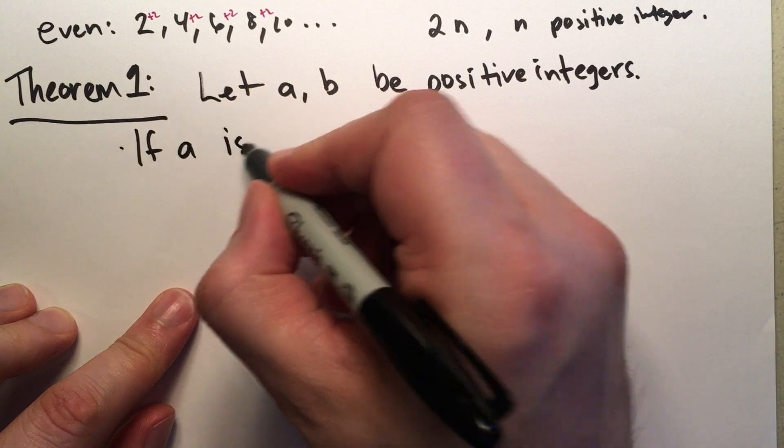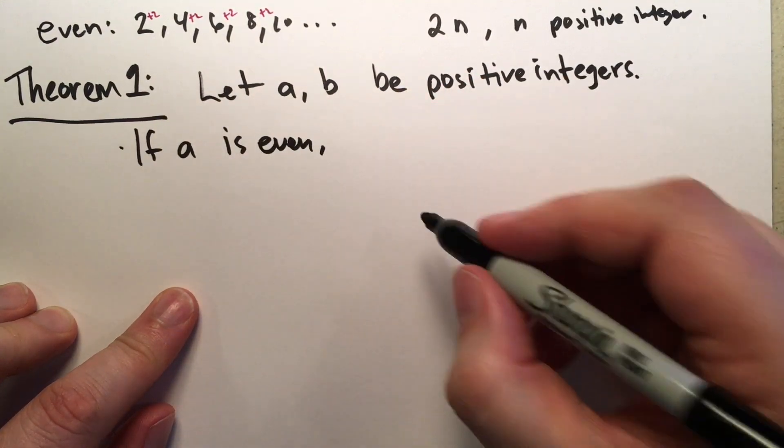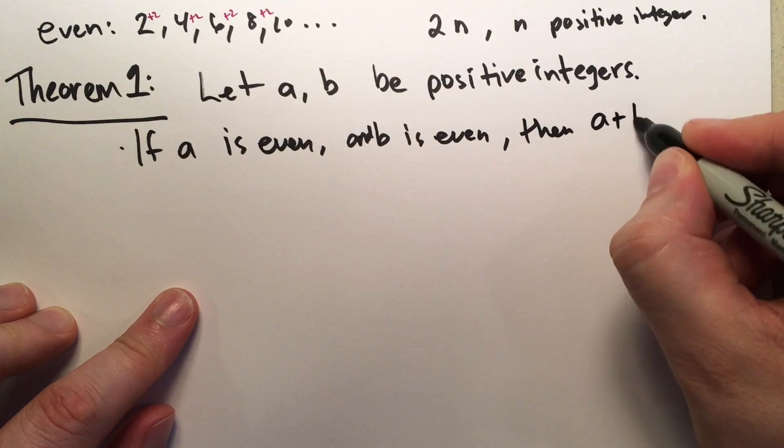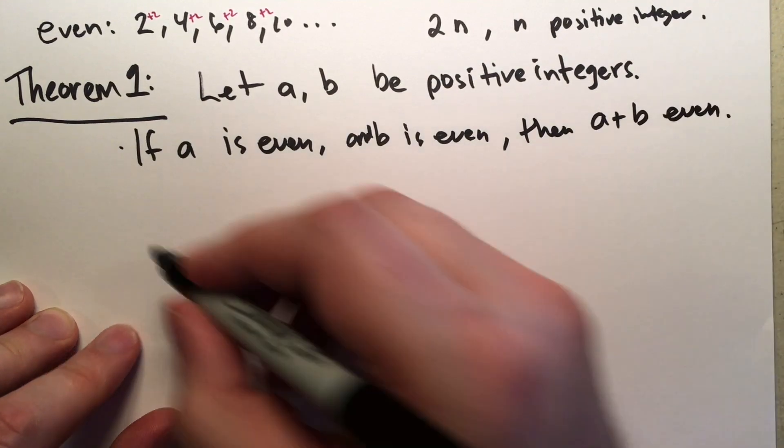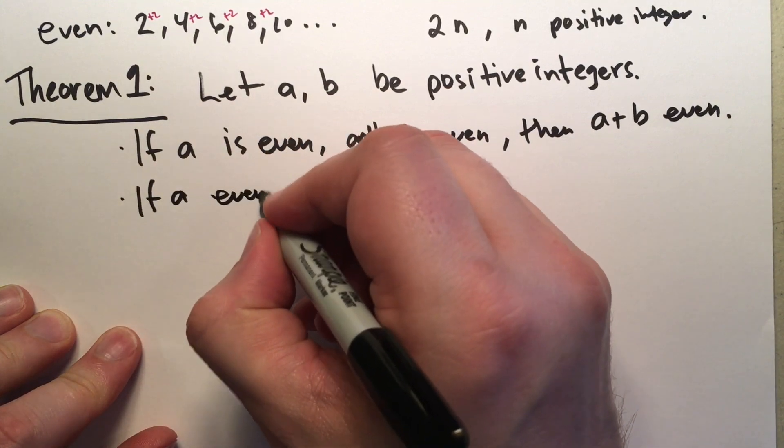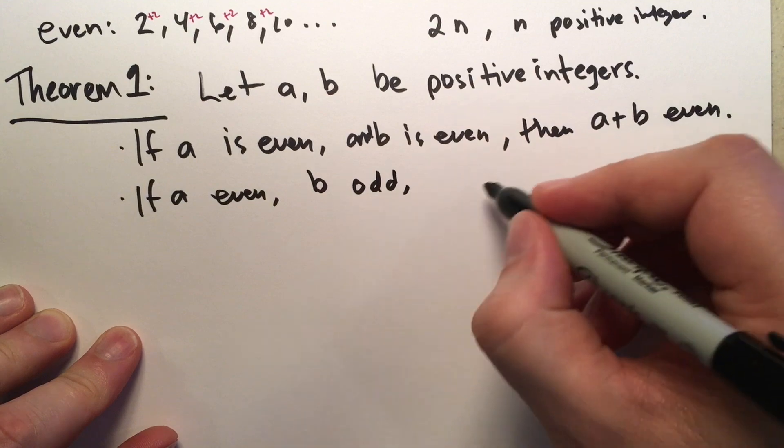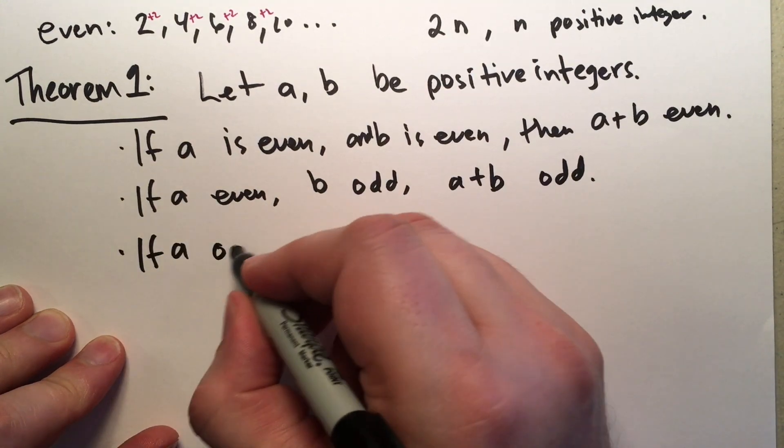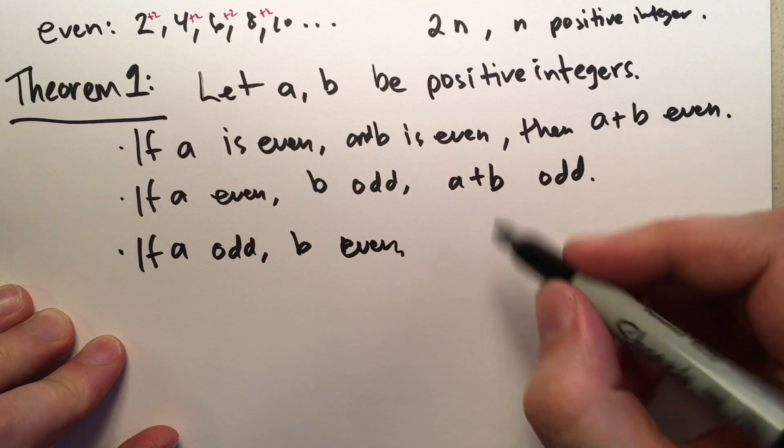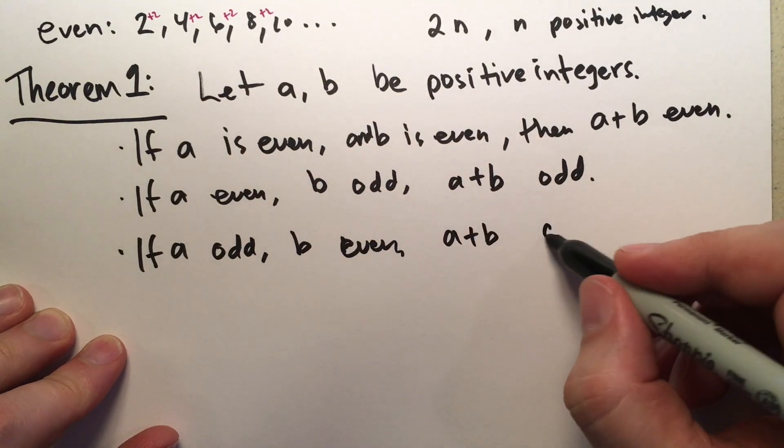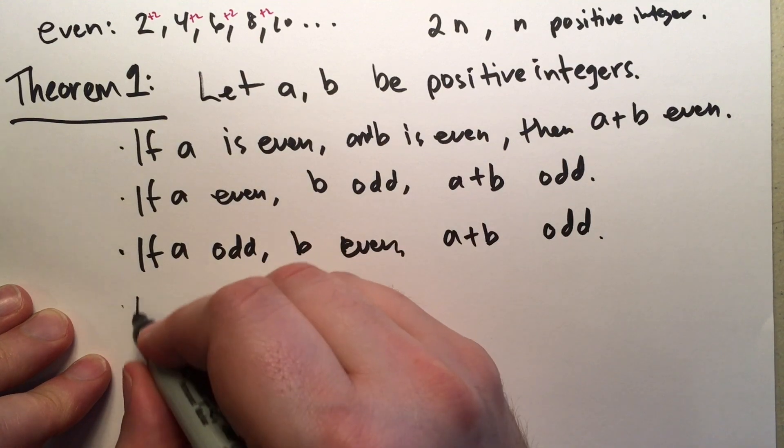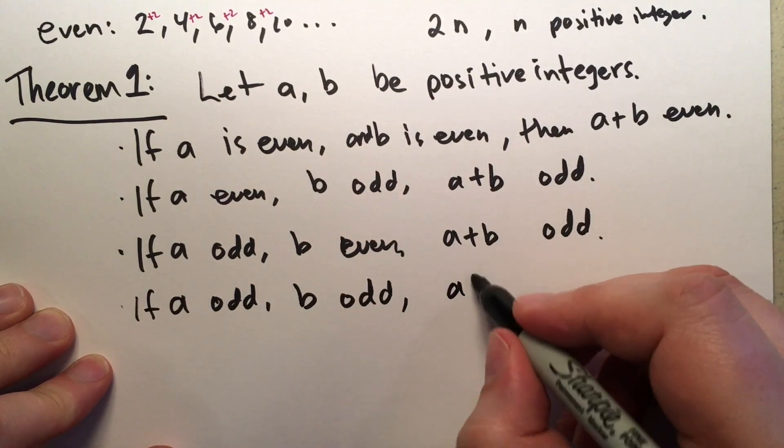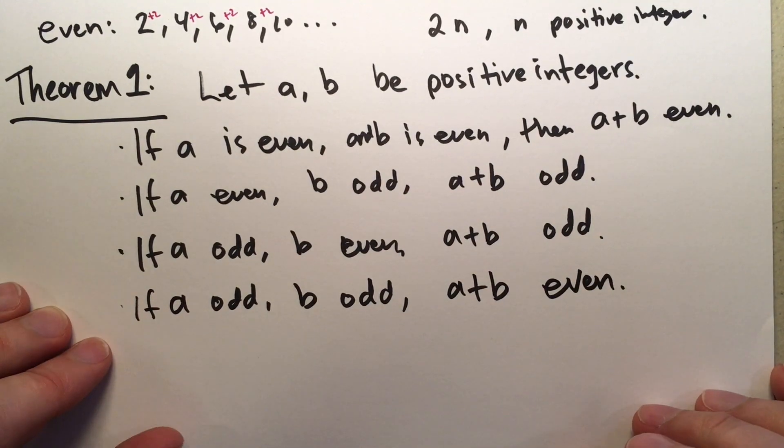If A is even and B is even, then A plus B is also even. If A is even but B is odd, then A plus B is odd. If A is odd and B is even, then A plus B is odd. And finally, if A is odd and B is odd, then A plus B is even.